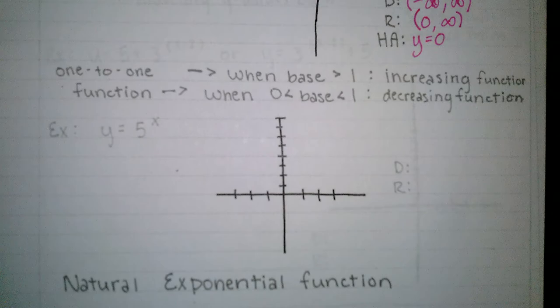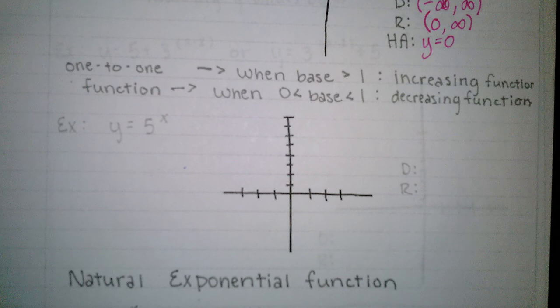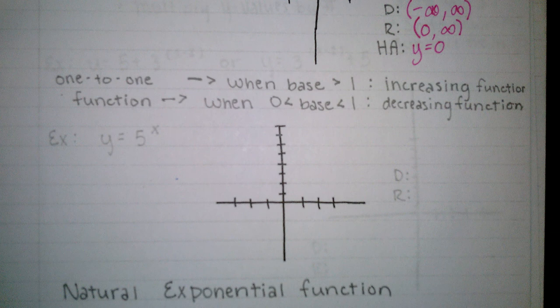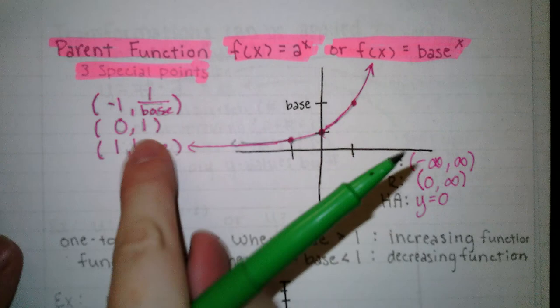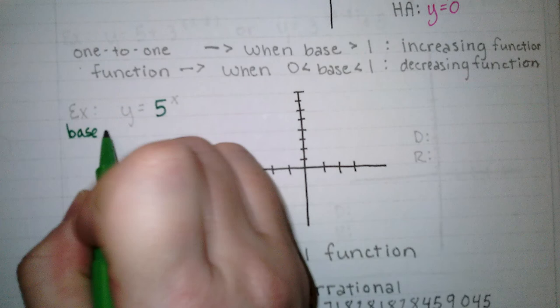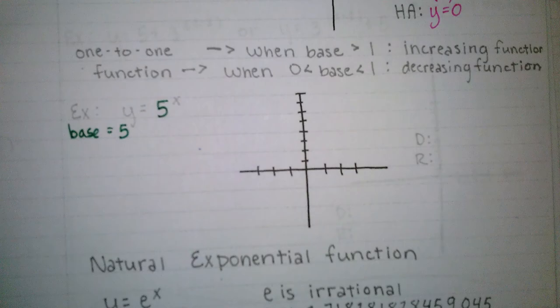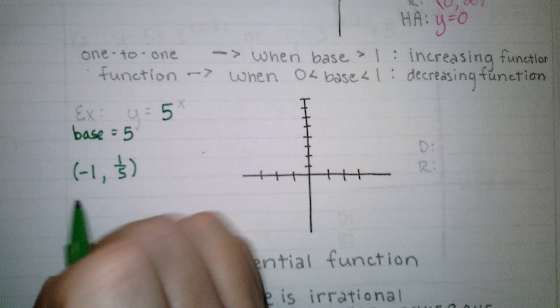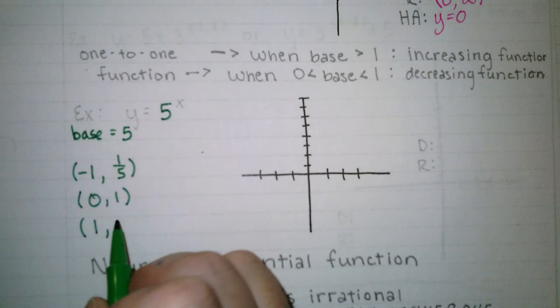Let's look at our first example using an actual number for the base. So whenever I go to graph these exponential functions, the first thing I want to do personally is identify what the base is and get my three special points so that I have a foundation of how to graph. So the base is always going to be the number that has the exponent attached to it. So the base here is 5, which is going to give me my three special points of negative 1, 1 fifth, and then 0, 1, and then the other one is 1, 5.